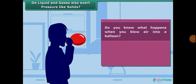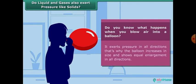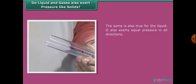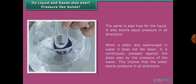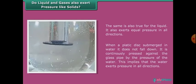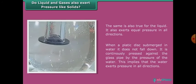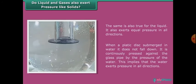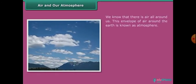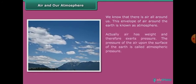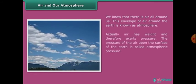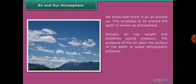Do you know what happens when you blow air into a balloon? It exerts pressure in all directions — that is why the balloon expands and shows equal enlargement in all directions. The same is true for liquids: they also exert equal pressure in all directions. When a plastic is submerged in water, it is continuously pressed by the pressure of the water, implying that water exerts pressure in all directions. We know that there is air all around us — this envelope of air around the Earth is known as the atmosphere. Air has weight and therefore exerts pressure. The pressure of the air upon the surface of the Earth is called atmospheric pressure.